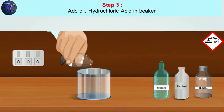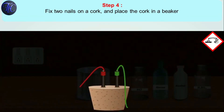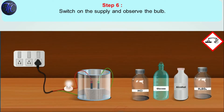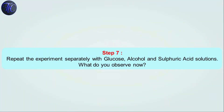Step 2: Take a beaker. Step 3: Add hydrochloric acid in the beaker. Step 4: Fix two nails on a cork and place it in the beaker — you can also use graphite rods. Step 5: Connect the nails to the two terminals of a battery or AC supply through a bulb and a switch. Step 6: Switch on the supply and observe the bulb. You will observe that the bulb is glowing.